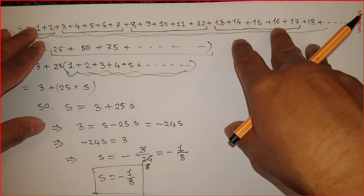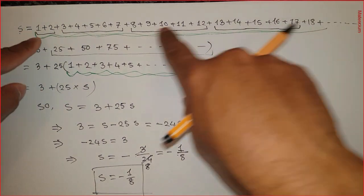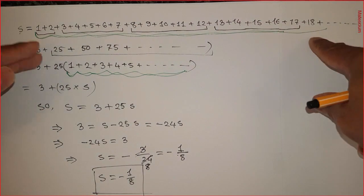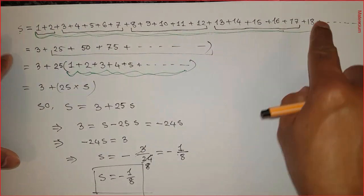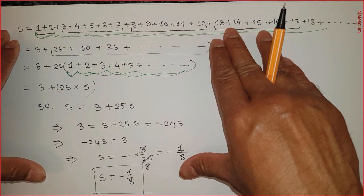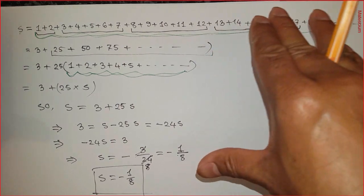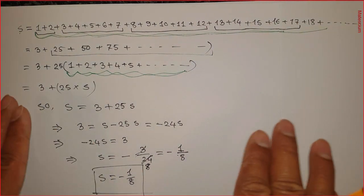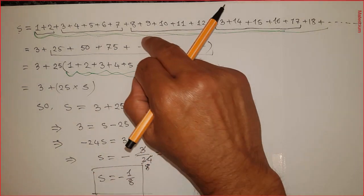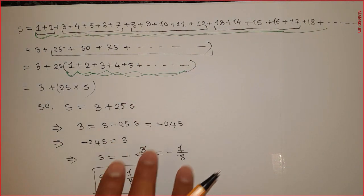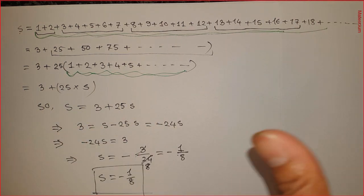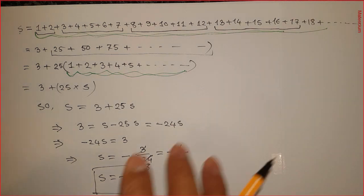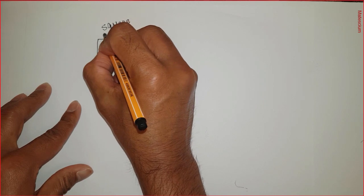If you think in a general way, you'd say this series equals infinity — a very large number that is not countable. That is the normal thinking according to conventional mathematics. But I proved by two different methods that this series equals minus 1 over 8. I admit something is wrong in this calculation; I did not follow the ground rules of mathematics somewhere in this entire calculation. Your task: if you know where exactly the mistake is, write it in the comment section and let's discuss it.